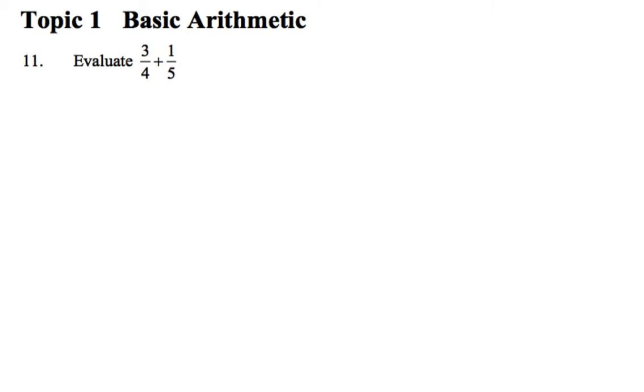They want us to evaluate 3 quarters plus 1 fifth. We could type that into our calculator, but if we happen to not have our calculator handy, before we add fractions, we've got to turn them into the same bottom number. So we'll try and pick a number that 4 and 5 can both go into, and I'm here to tell you that 20 would be a good one. What have I done to the 4 to turn it into 20? I've multiplied by 5, so I've got to multiply by 5 on the top as well. Gives us 15 over 20.